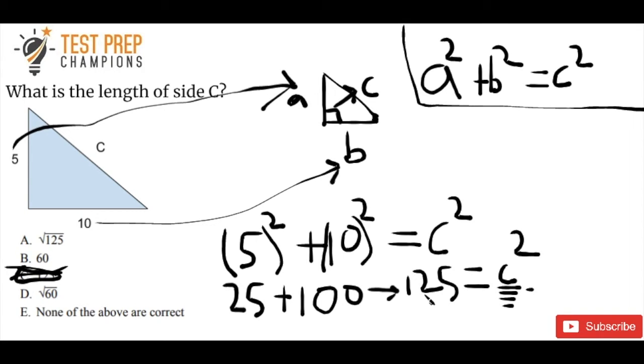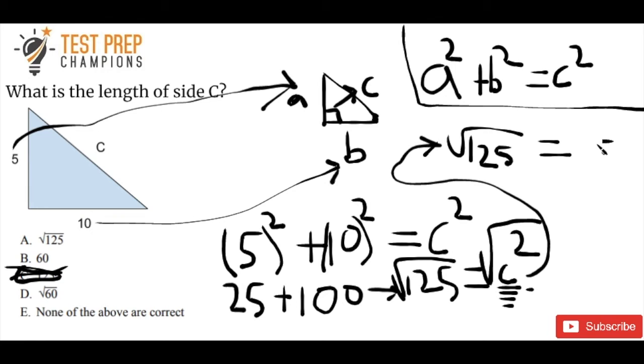We've got 125 equals C squared. So in order to get just C, we've got to take the square root of both sides here. So we take the square root of C squared, and we're going to take the square root of 125. And we can rewrite this whole thing, so I'm going to draw another arrow here showing me rewriting it. So the square root of 125 is equal to C.